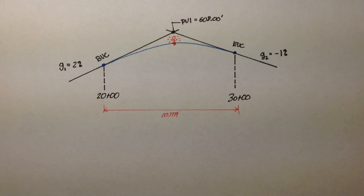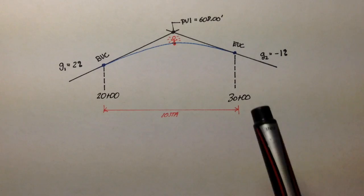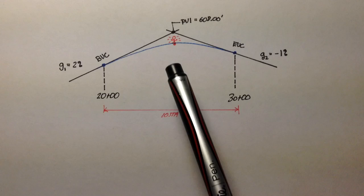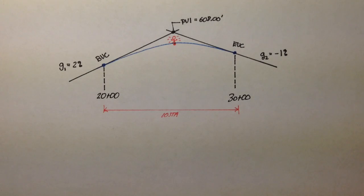In this example, we have a vertical curve already drawn out, and we have the entering tangent and the exiting tangent. There's several things we want to find.